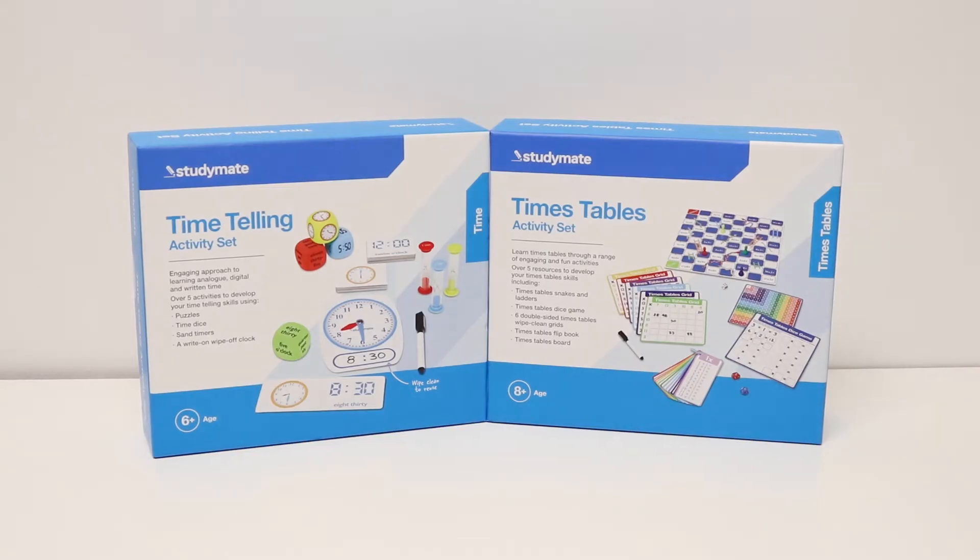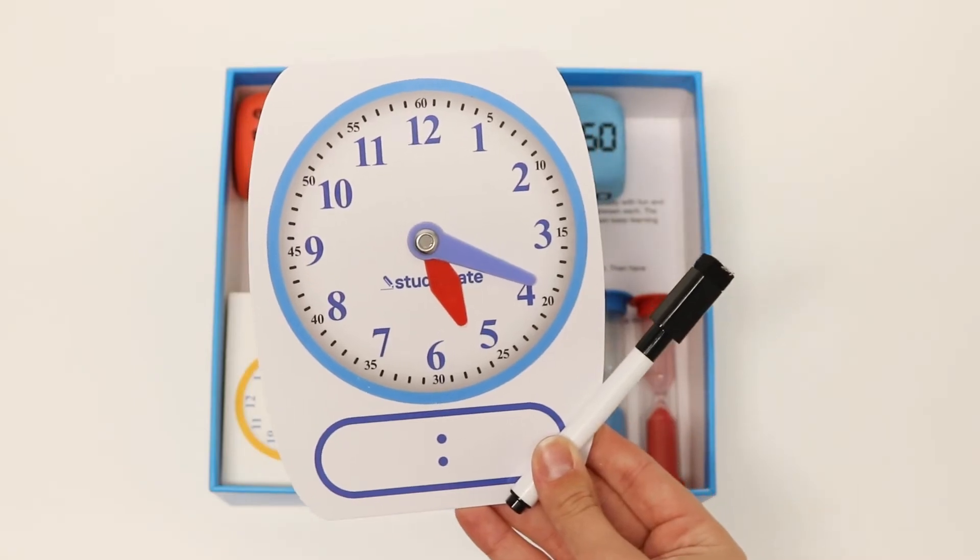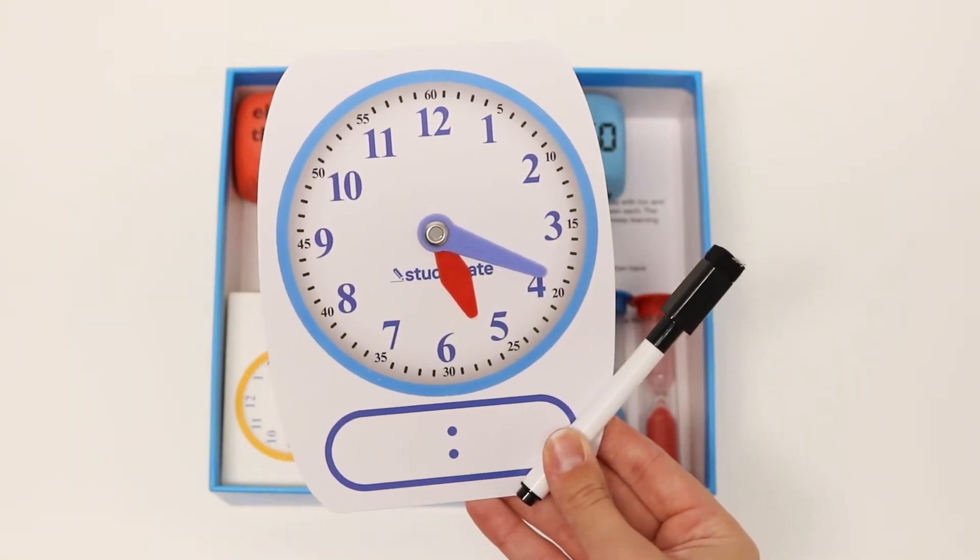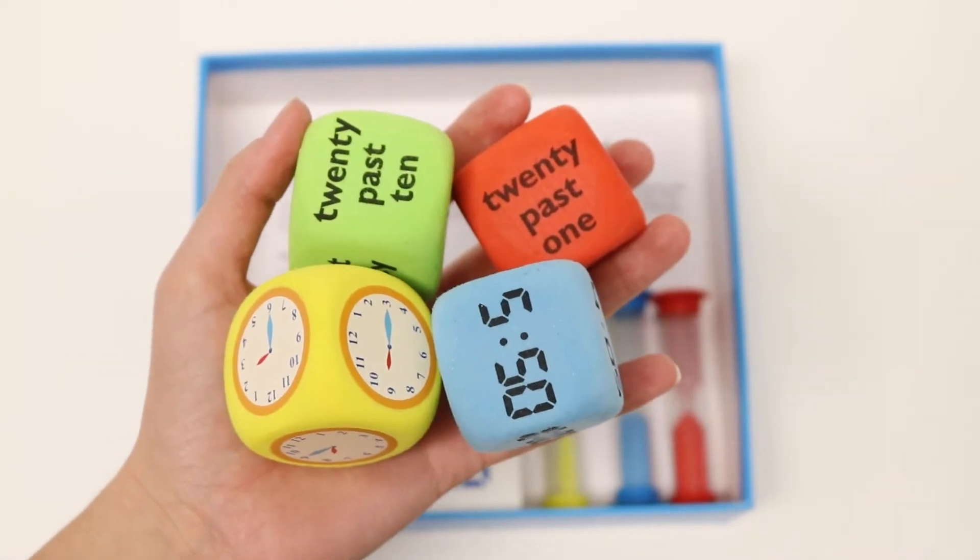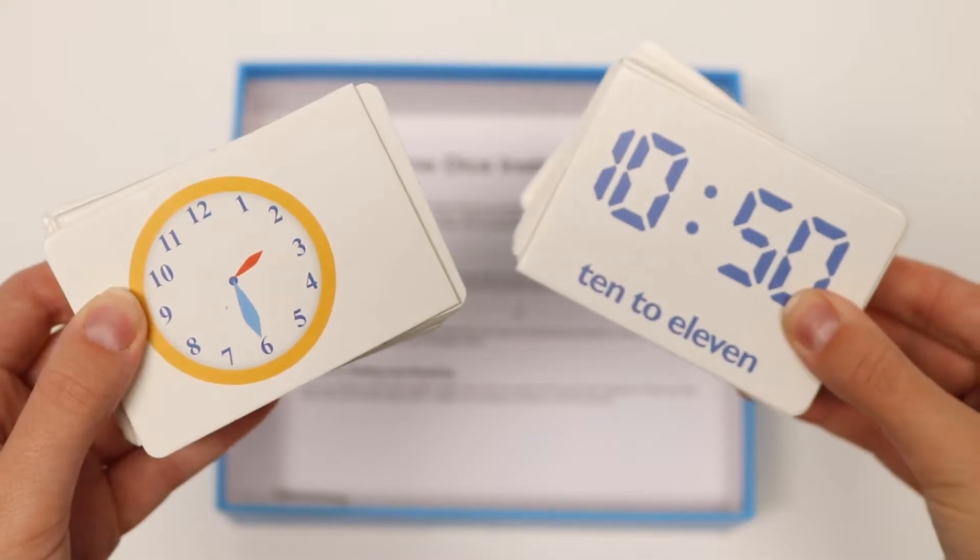Promote essential skills with these study-made activity sets. The time set features a write-on and wipe-off clock face, a wipe-clean marker, four large foam time dice, three sand timers, and 20 two-piece puzzles.